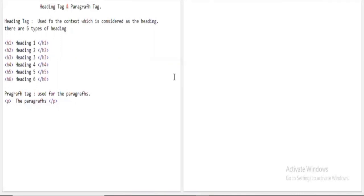H2 is slightly smaller than H1, and H3 is slightly smaller than H2. As the heading number increases, the size of that heading decreases. To clearly see the difference between H1, H2, H3, H4, H5, and H6, I will write a basic program demonstrating how heading and paragraph tags work.